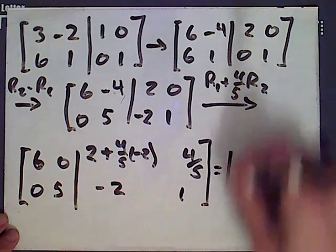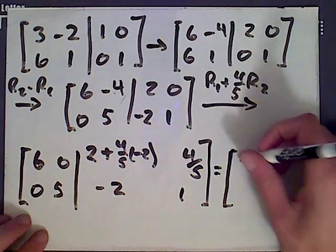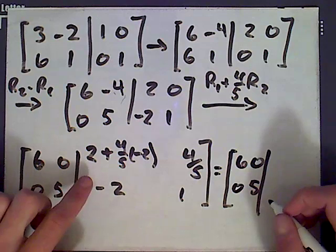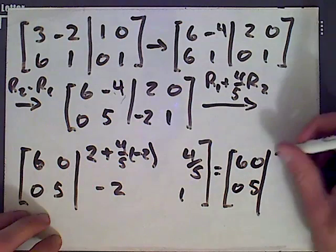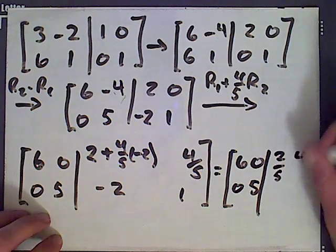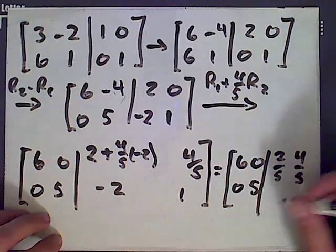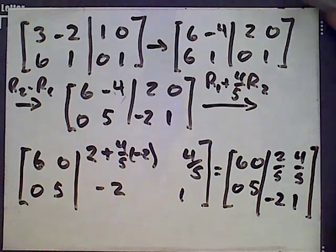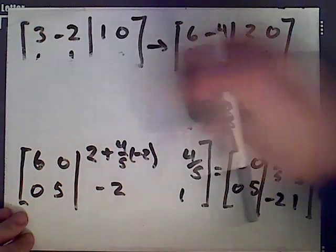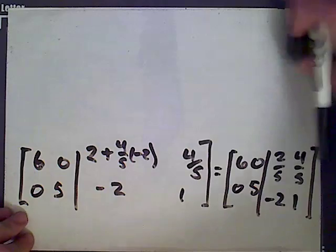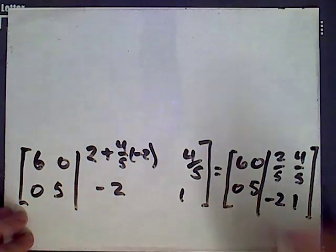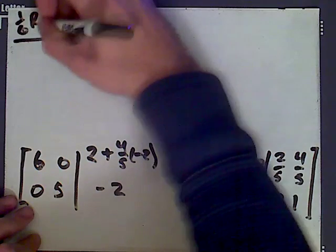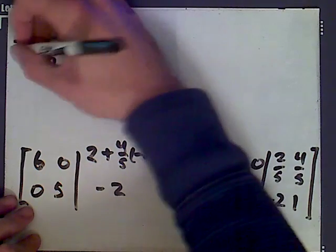So just add these fractions together here. This fraction ends up being 2 over 5. This is 4 over 5. And then we have negative 2 and 1. So I'm going to have to erase where we started. So we're row reducing this. There's one more step.